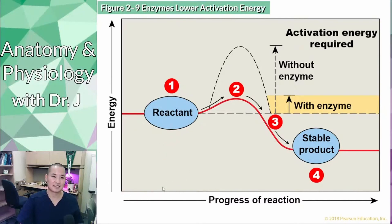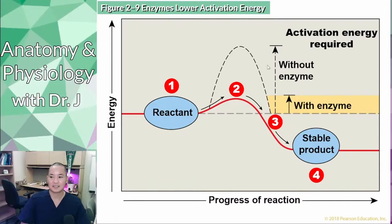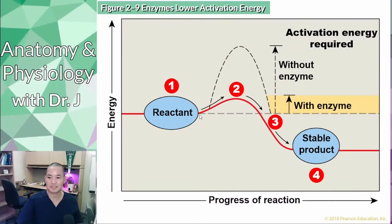You can think of the x-axis as time. You start off with a reactant and end up with a product, but in order to go from a reactant to a product you need a little energy. Over here is the energy you would need without an enzyme, and here's the energy you would need with an enzyme. I like to think of it like pushing a car over a hill.